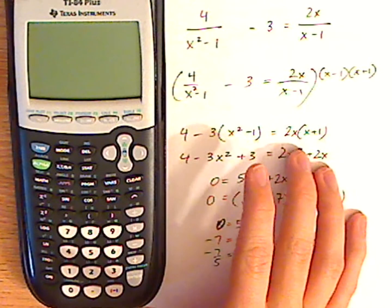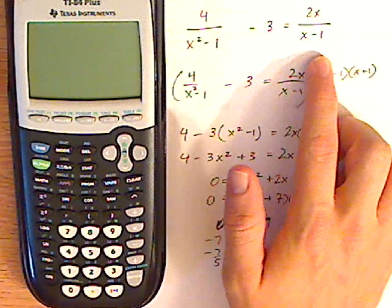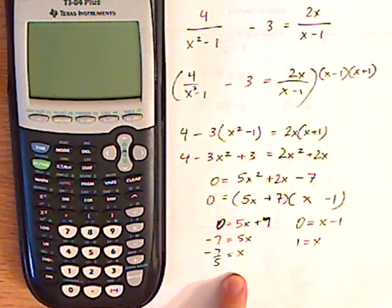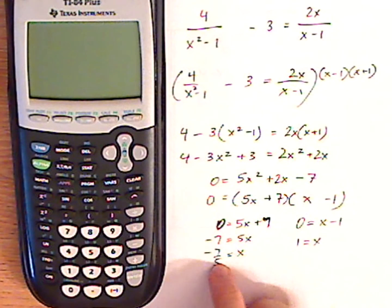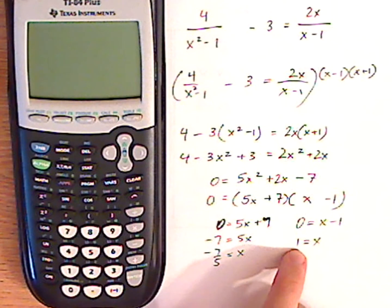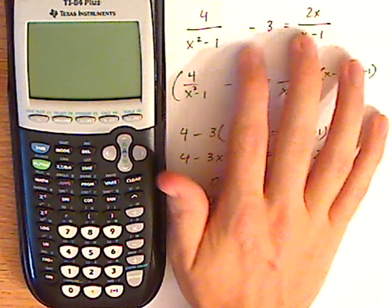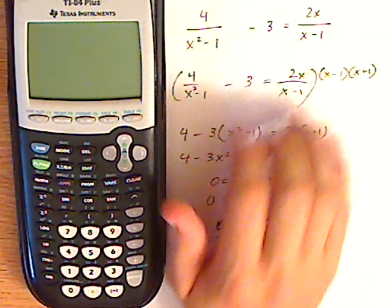I worked out a problem that's a rational equation, and I got these as solutions: negative seven-fifths and also one. I want to check to see if they are solutions for this equation.